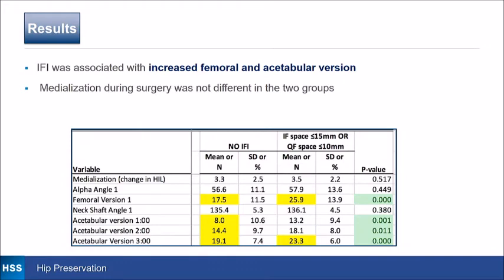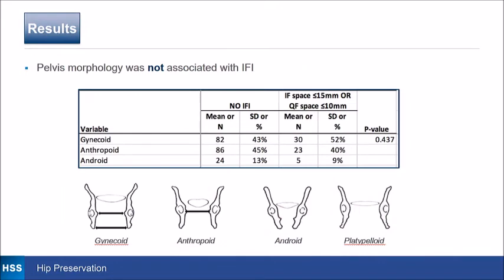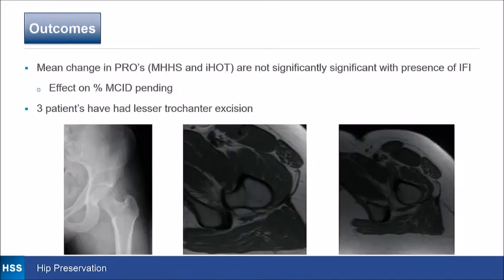IFI was associated, as previously shown, with femoral and acetabular anteversion. However, medialization between the two groups — those that had IFI and those that didn't — was the same. Pelvic morphology was not associated with ischial femoral impingement, though those with decreased space had a slightly higher rate of gynecoid pelvis. Mean changes in patient-reported outcomes did not differ significantly with the presence of IFI, but we are still narrowing results down to MCID values.